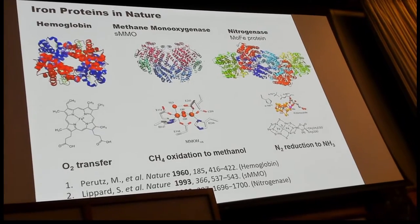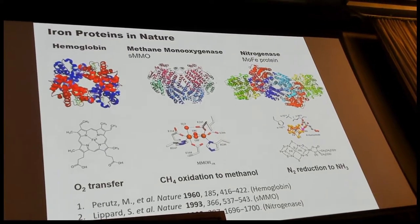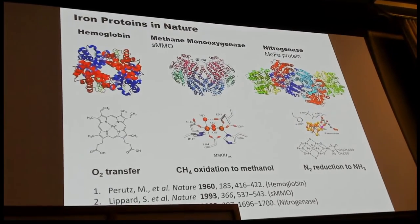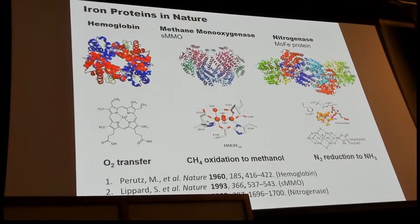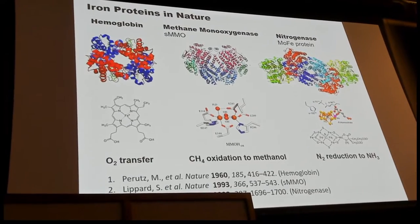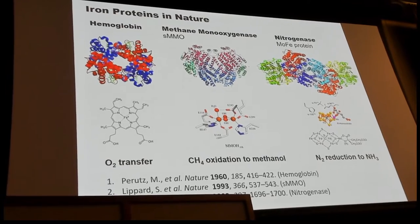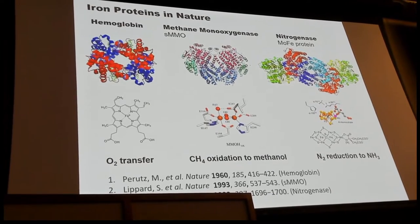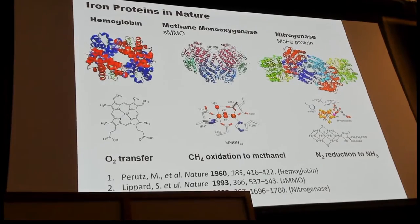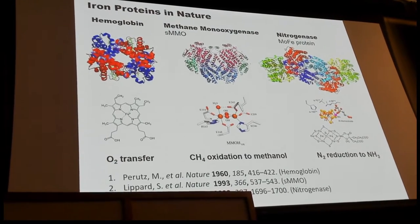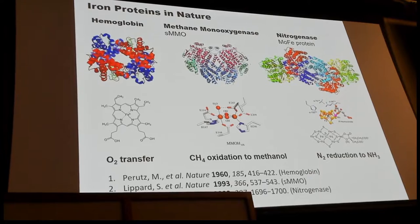For two-electron reactions, nature developed dimeric iron centers to facilitate the reaction. The most sophisticated cluster developed by nature is the iron-7 molybdenum cofactor. This cluster is involved in six-electron transfer for nitrogen fixation.